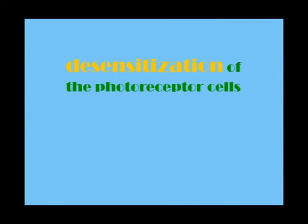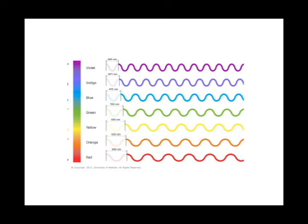Negative after image is very different from positive after image. It's caused by the desensitization of the photoreceptor cells and you will see a complementary color of the original image. We all know that each color has a different wavelength. Human eyes have three types of color receptors in retina.